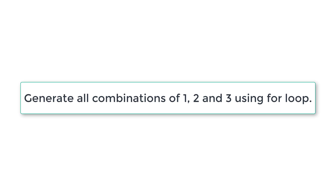Let's write a C program to generate all the combinations of numbers 1, 2 and 3 using for loops.